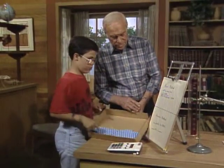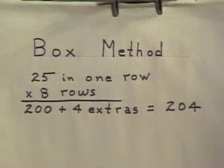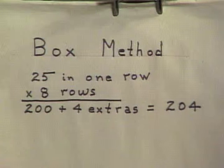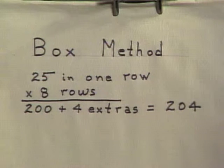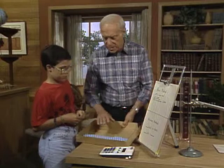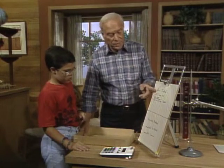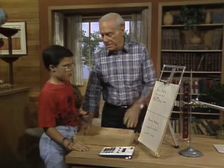There were 25 in one row, and there were eight rows. That's 200, and then with the four extras, it comes out to 204. So that's our estimate using — you can see why I call it the box method.